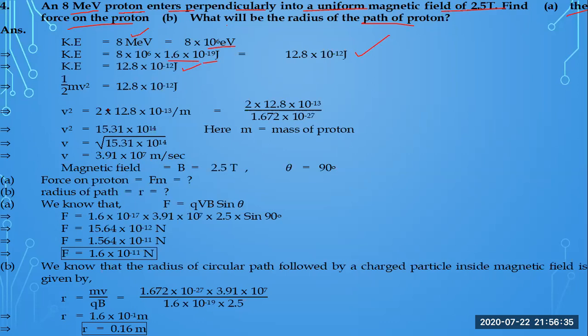The kinetic energy formula is half mV squared, equal to 12.8 multiplied by 10 to the minus 12 joules. Since the speed is not given, we first need to calculate the speed. We calculate the speed using the kinetic energy equation, and after getting the energy, we determine the speed of the proton.